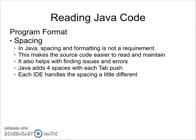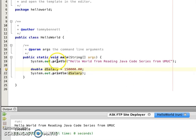Secondly, proper formatting makes code more readable and maintainable, and it helps in finding issues and errors. Whenever you hit the tab key in Java — I can only speak for NetBeans — it moves the cursor four spaces in, which creates a very nice format. Let me bring up the IDE so you can see: this is four spaces in.